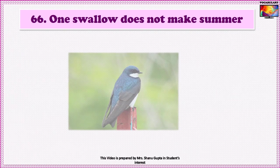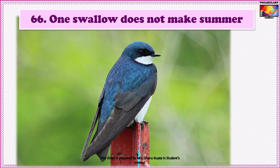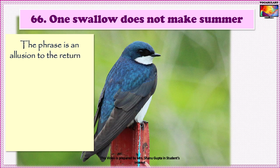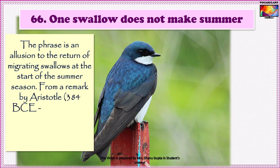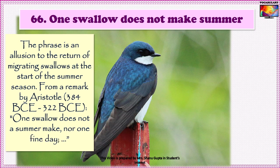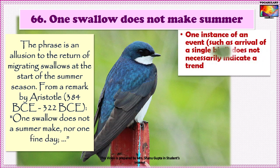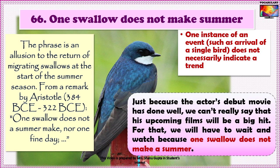Our next idiom is 'One swallow does not make a summer.' The phrase is an allusion to the return of migrating swallows at the start of the summer season. The first known use is a remark by Aristotle: 'One swallow does not a summer make, nor one fine day.' The idiom is used to emphasize that one instance of an event might be one-off and does not necessarily indicate a trend. An example: 'Just because the actor's debut movie has done well, we can't really say that his upcoming films will be a big hit. For that we will have to wait and watch, because one swallow does not make a summer.'